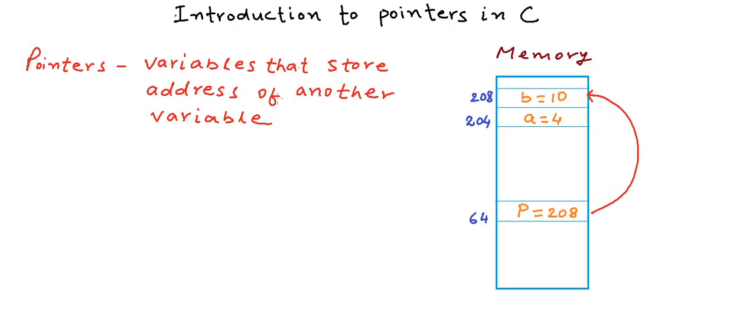A normal variable is declared by writing the data type and the variable name. So int A means that we have a variable A of type int. If we want to write a pointer variable that should point to another variable, all we do is we put an asterisk sign before the variable. So P is now a pointer variable that points to an integer. So P is a variable that can store the address of an integer.